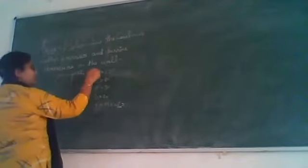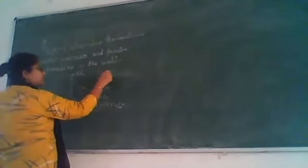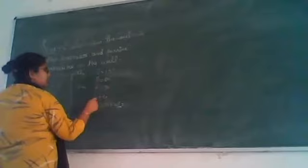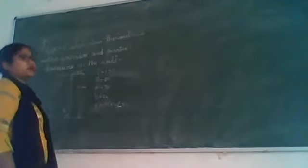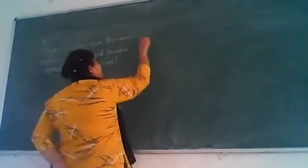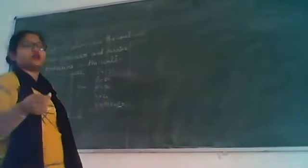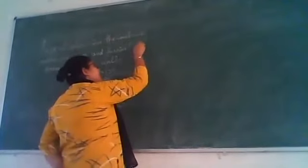The question asks to find active pressure and passive pressure on the wall. What we have in the question: i is 15 degrees, beta is 20 degrees, phi dash is 20 degrees, delta is 20 degrees, and gamma is 19. For Coulomb's theory, Coulomb's active pressure, we have Coulomb's theory.